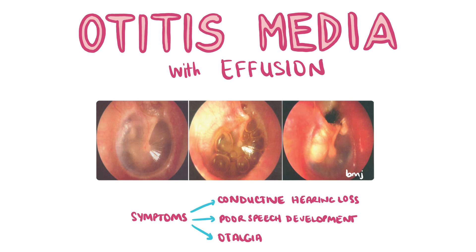Otitis media with effusion, also known as glue ear, is common in children due to the horizontal Eustachian tube limiting drainage of the middle ear. Patients will present with conductive hearing loss, poor speech development and otalgia. On otoscopy you will see a retracted straw-coloured tympanic membrane. It is useful to request a tympanogram and pure tone audiogram. Otitis media with effusion is usually self-limiting and resolves within three months. In cases of recurrent bilateral otitis media with effusion, surgical intervention — that is, the insertion of grommets — may be appropriate.